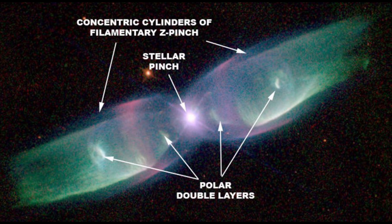The electric discharge in a plasma cloud creates a double layer along its axis. Positive charge builds up on one side and negative charge on the other. A strong E-field exists between the sides, and if enough current is applied, the double layer glows.